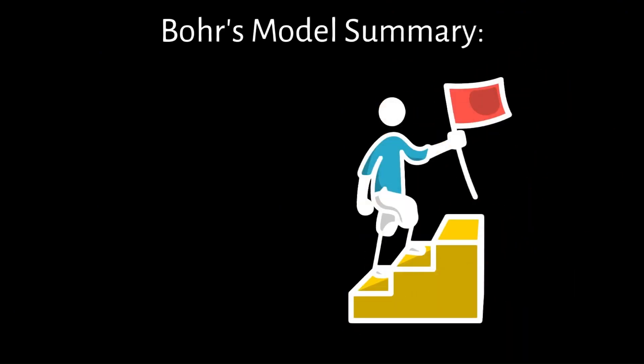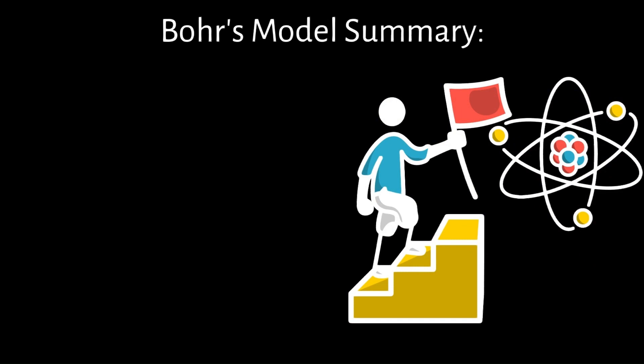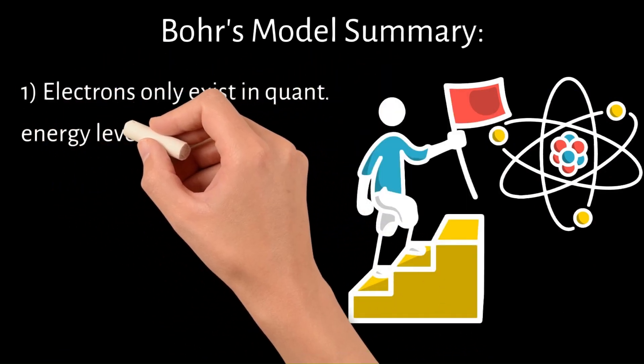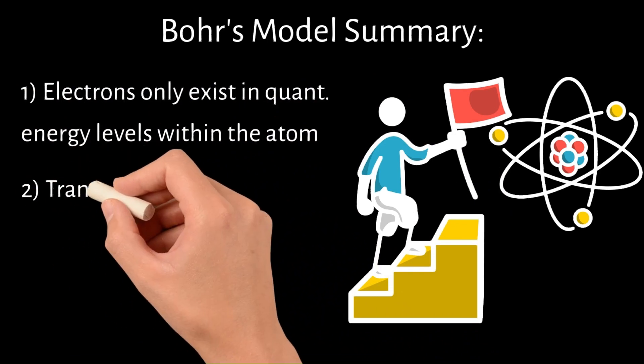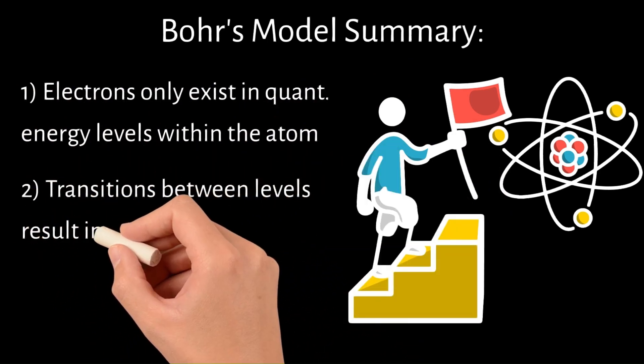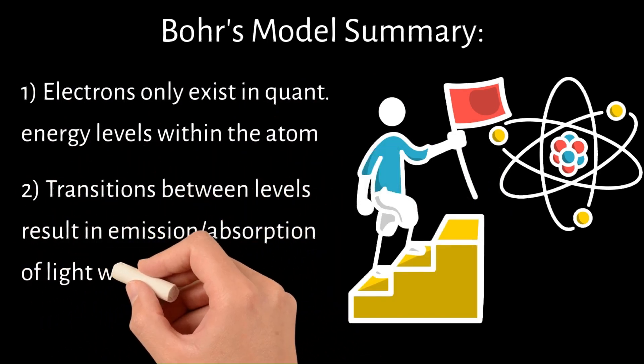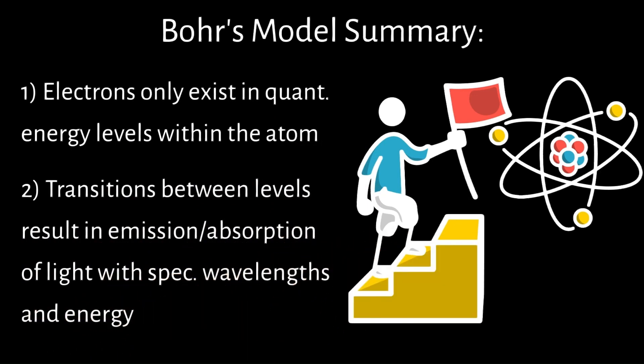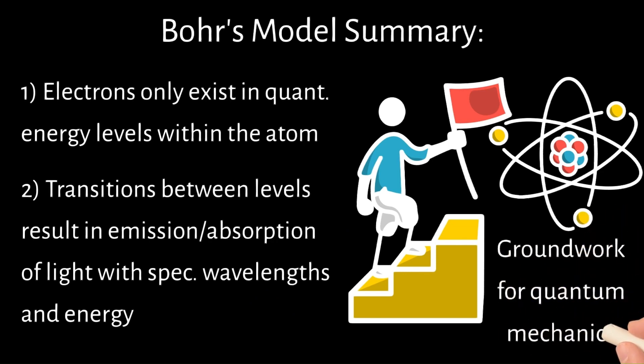In summary, Bohr's model was an important step in the development of a comprehensive model of an atom. Its most significant contributions were that electrons only exist in quantized energy levels within the atom, and the transitions between these levels result in the emission or absorption of light with specific wavelengths and energy. This was a major step forward in understanding atomic structure and the origins of spectral lines, laying the groundwork for quantum mechanics.